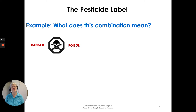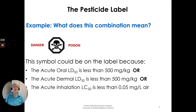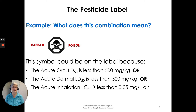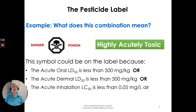For example, a danger-poison symbol combination would appear on the label when the acute oral LD50 is less than 500 mg/kg, the acute dermal LD50 is less than 500 mg/kg, or the acute inhalation LC50 is less than 0.05 mg/L in air. This indicates the product is highly, acutely toxic via ingestion, skin contact, or inhalation.